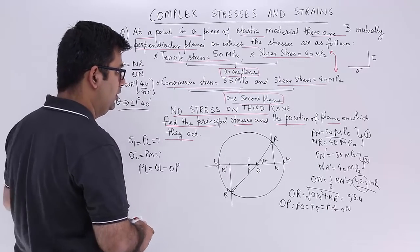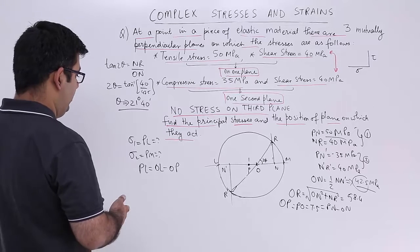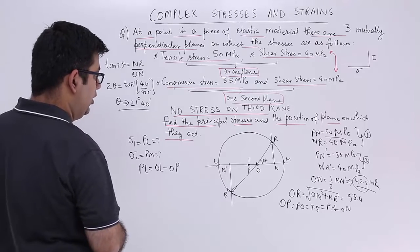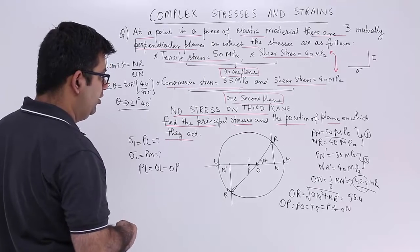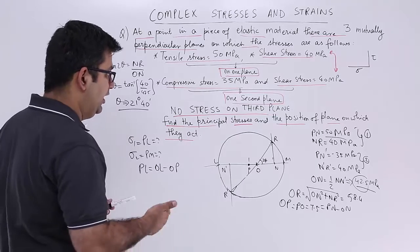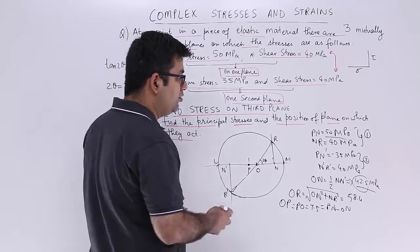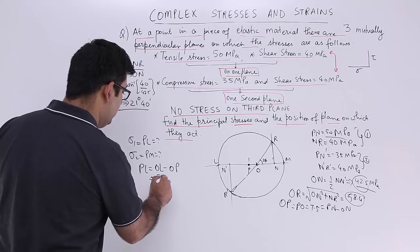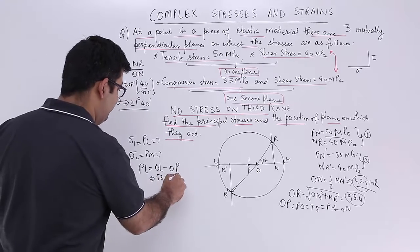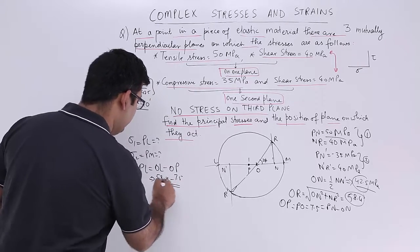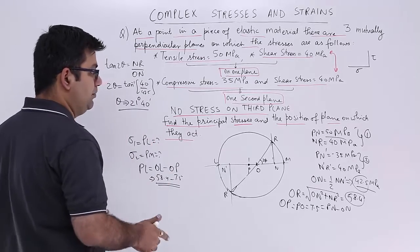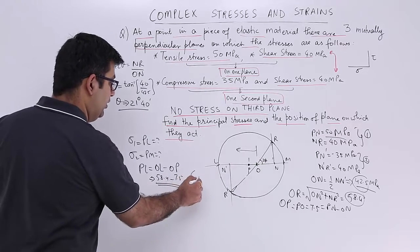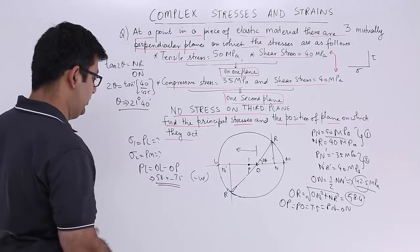We have got that. Now let us find out the value for sigma 1 or PL. So PL is OL minus OP. Now how much is OL? OL over here is nothing but the radius, which is equal to OR. Now how much is OR? 58.4. So 58.4 minus OP which is 7.5. So this will give you the first principal stress and because it is towards the left hand side it will be compressive. So this will be a negative stress, a compressive stress.